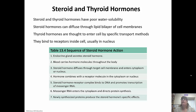Thyroid hormones are thought to enter the cell by specific transport methods, but very importantly, they bind receptors inside the cell — usually right in the nucleus. What's going to happen is the steroid and thyroid hormone will diffuse right through the lipid bilayer, go straight to the nucleus, enter through the nuclear pore, and bind to the receptors inside the nucleus. Then they bring about their change — it could be transcribing a gene or whatever the message is supposed to be.